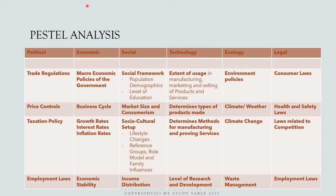Moving on to the social factors. Here what is explained are the medium and long-term effects of social and demographic trends on business outcomes as well as the economy. It describes the impact of changes in social structure, values, tastes and attitudes on the organization. The factors usually studied under this include the social framework, market size and consumerism, socio-cultural setup, and income distribution, amongst others.